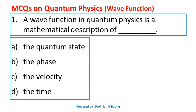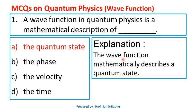A wave function in Quantum Physics is a mathematical description of — and the options are: the Quantum State, the Phase, the Velocity, and the Time. The wave function mathematically describes a Quantum State. A Quantum State does not give the exact position or momentum of the particle, but it can give the probability of finding the particle in some region and range of momentum. So, the answer is Quantum State.